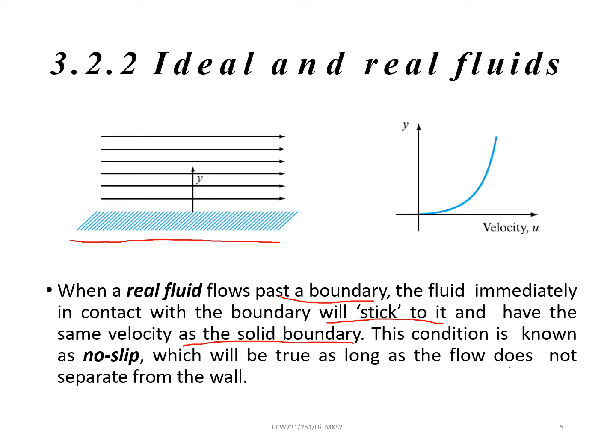Basically solid boundary is not moving. So when the fluid moves towards the solid boundary, it will become slower, it will become zero. Because solid boundary usually does not move. For example, you have waves hitting a cliff. The cliff is the solid boundary, and the waves hitting the cliff will slow because they try to follow the velocity of the solid boundary. This condition is called as no-slip, no-slip condition, which will be true as long as the flow does not separate from the wall.